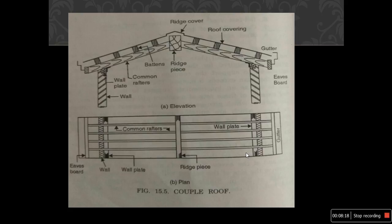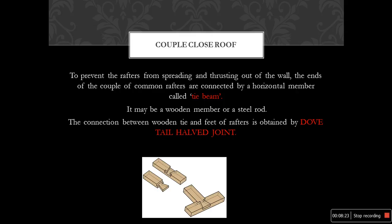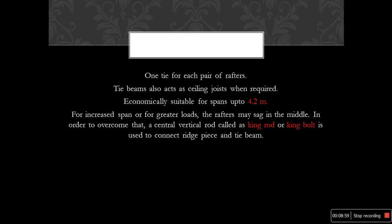Couple-close roof is provided to prevent the rafters from spreading and thrusting out of the wall near the ends. It is connected by means of a horizontal member called a tie beam, which may be a wooden member or a steel rod. The connection between the wooden tie beam and the feet of the rafters is obtained by a dovetail halved joint. This is provided for a span up to 4.2 meters.